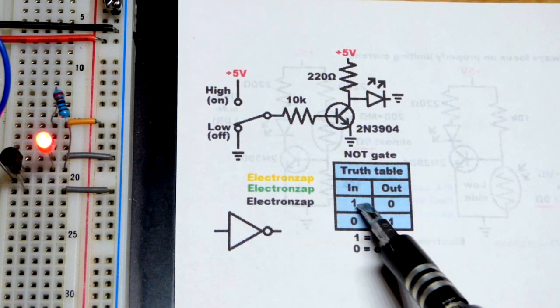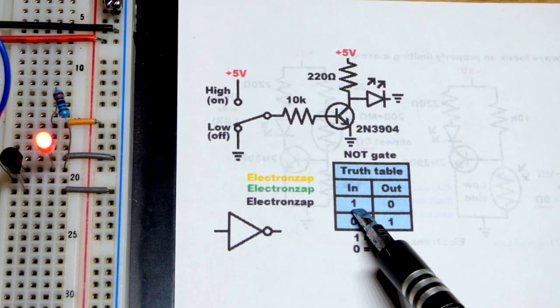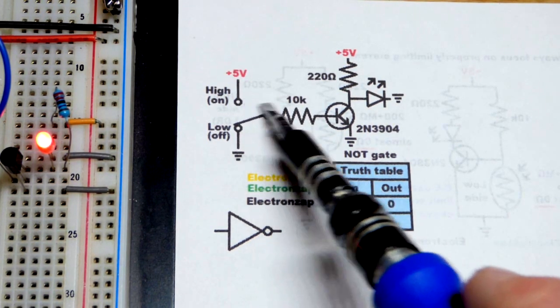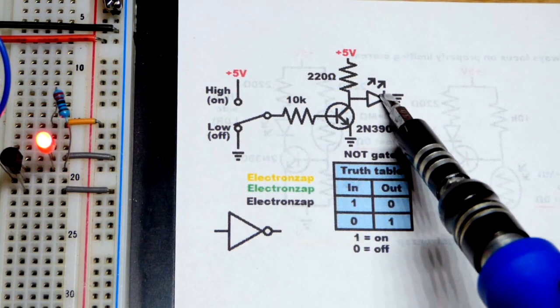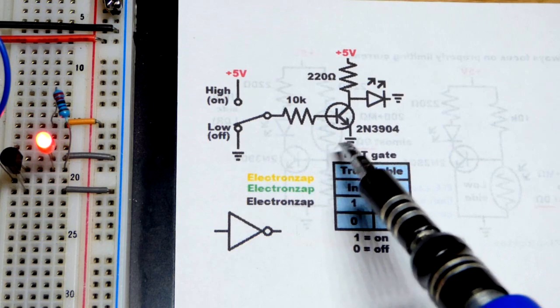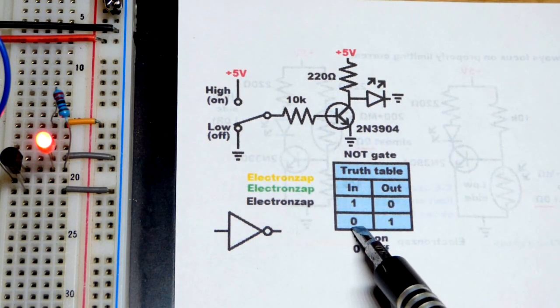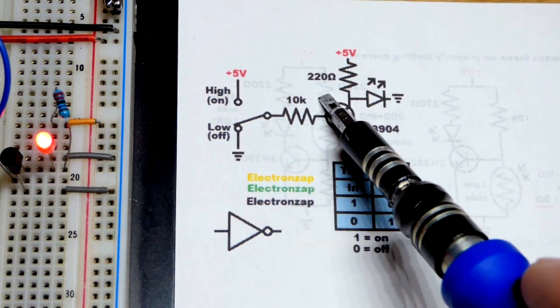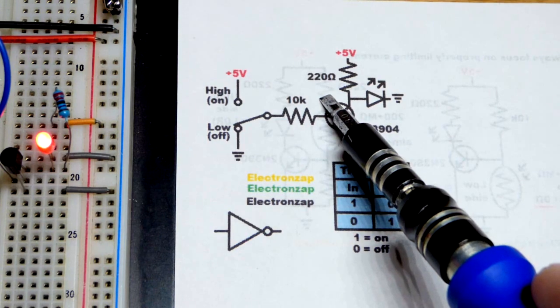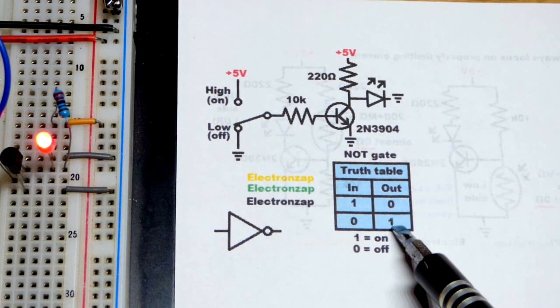Here we have a truth table. When the input is high—5 volts—the transistor will be on and the LED will be off. The transistor takes away all the current. When the input is off or low, the transistor doesn't conduct at all and the LED is on.